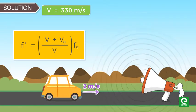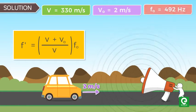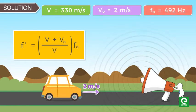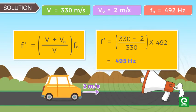Substituting v = 330 m/s and v₀ = 2 m/s and f₀ = 492 Hz, we get f' ≈ 495 Hz.